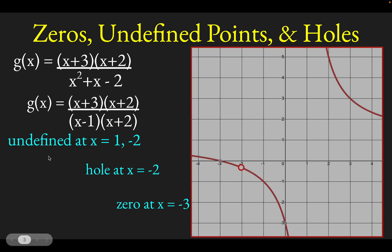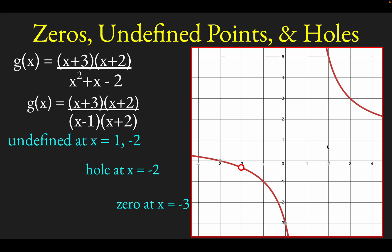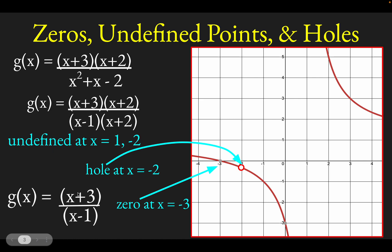Let's see what the graph looks like. It's supposed to be undefined at x equals 1 — you can see it blows up to infinity coming from above and to negative infinity coming from below at x equals 1. We also have this hole at x equals negative 2. This function is exactly the same as g of x equals x plus 3 over x minus 1, with the exception of the hole at x equals negative 2. The extra factors of x plus 2 in both the numerator and denominator generate that hole — an undefined point with an x-coordinate of negative 2.